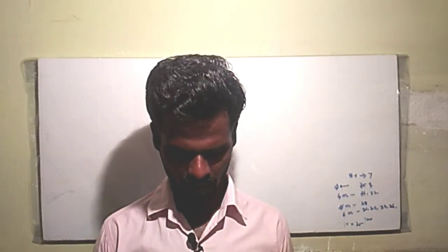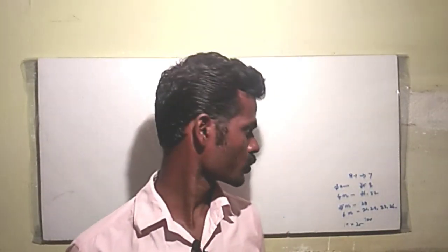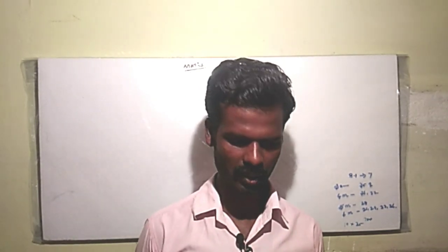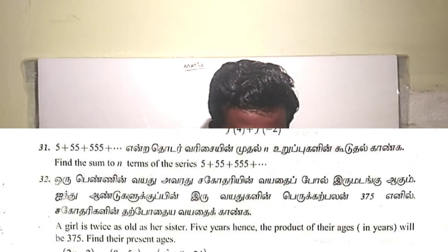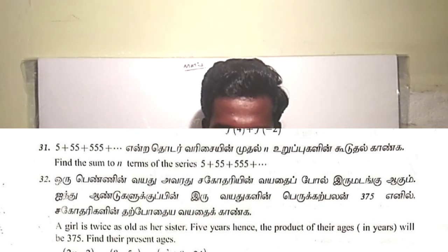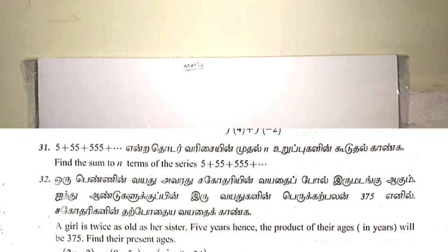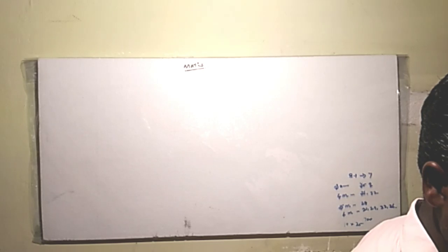Hi students, in the video number model question paper question 32. A girl is twice as old as her sister. Five years hence, the product of their ages in years will be 375. Find their present ages.